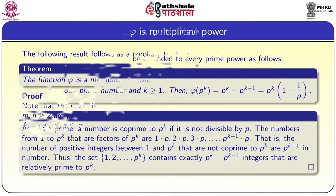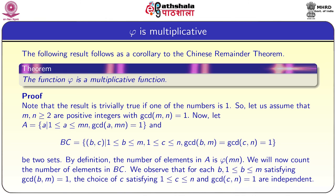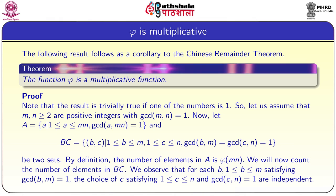We evaluated φ at 2^k as well as φ at p^k for all odd primes. Once we evaluate the phi function at prime powers, if we show φ is multiplicative, then we can know the values of φ at all natural numbers n. We are going to show that φ is a multiplicative function, that is, φ(mn) = φ(m)·φ(n) whenever gcd(m, n) = 1.